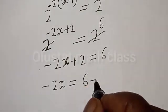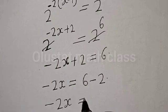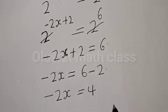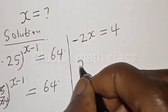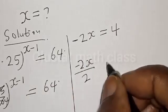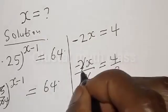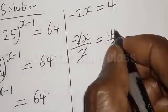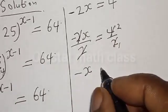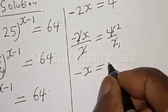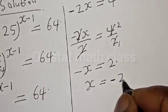Then we have minus 2x is equal to 4. Let's divide both sides by 2: minus 2x divided by 2 equals 4 divided by 2. The 2s cancel and we have minus x is equal to 2, therefore x is equal to minus 2. That is the value of x.